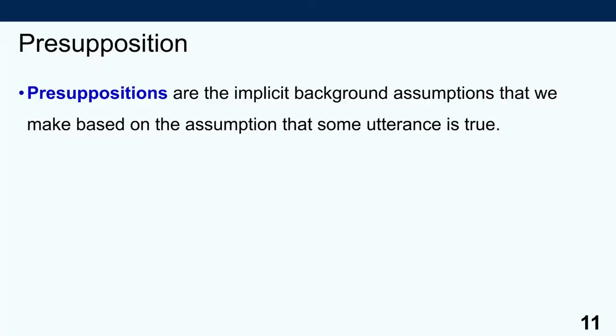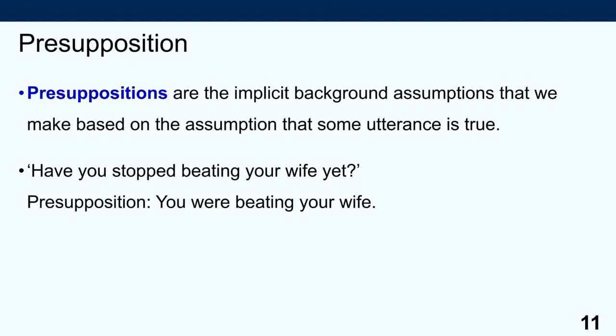This brings us to presuppositions. Presuppositions are the implicit background assumptions that we make based on the assumption that some utterance is true. For example, if I ask you, 'Have you stopped beating your wife yet?' there is a presupposition here that you were beating your wife in the first place. If I say, 'Rose and the doctor travel through time together,' there's a presupposition that time travel is possible — if it wasn't, the sentence could not possibly be true. Therefore, by asserting its truth, I'm also asserting that time travel must be possible, even though I have never said such a thing. Similarly, the utterance 'Have you stopped beating your wife yet?' presupposes you have a wife and have been beating her.